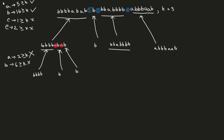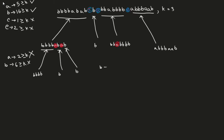Now for the third part — it has one A, which is not greater than or equal to k, and B occurs six times, which is greater than or equal to k. So we mark and cross out the A. This splits into: B, B, and then a part with four B's.